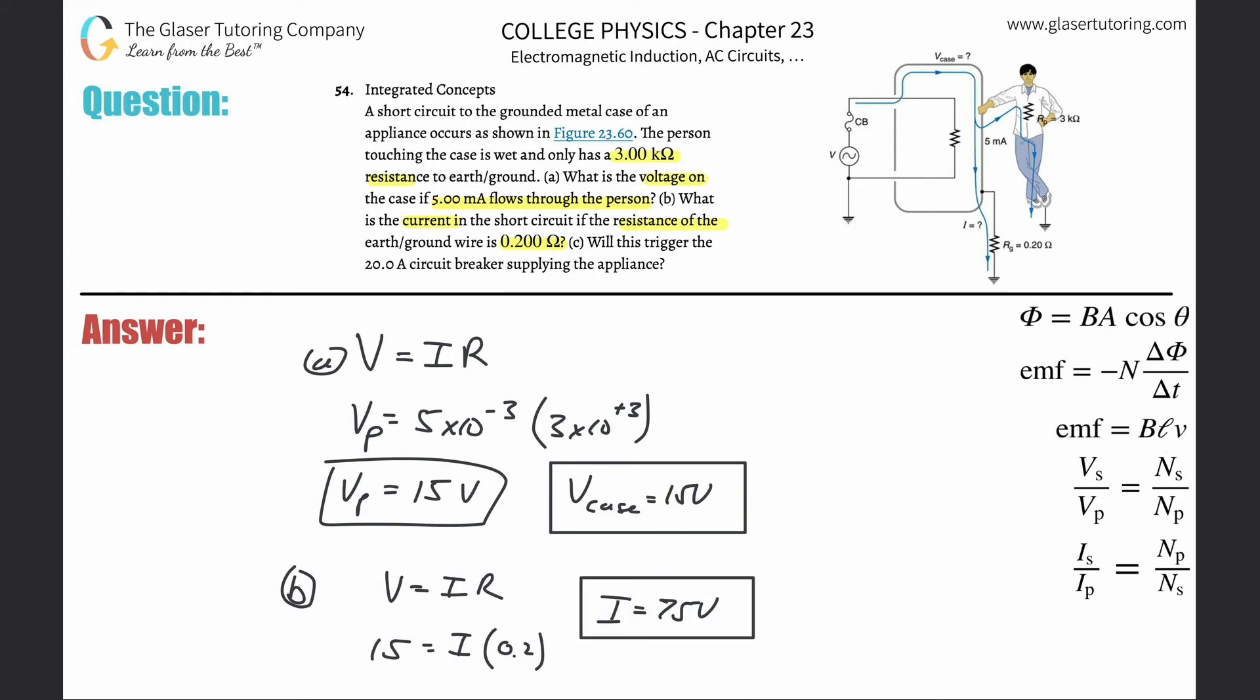And it says, will this trigger the 20 amp circuit breaker? Yes, anytime the current that's flowing through is larger than the current rating of the breaker, it trips or triggers. Alright guys, thanks for tuning in, hopefully this helps you know what to do, and I'll see you soon. Take care.